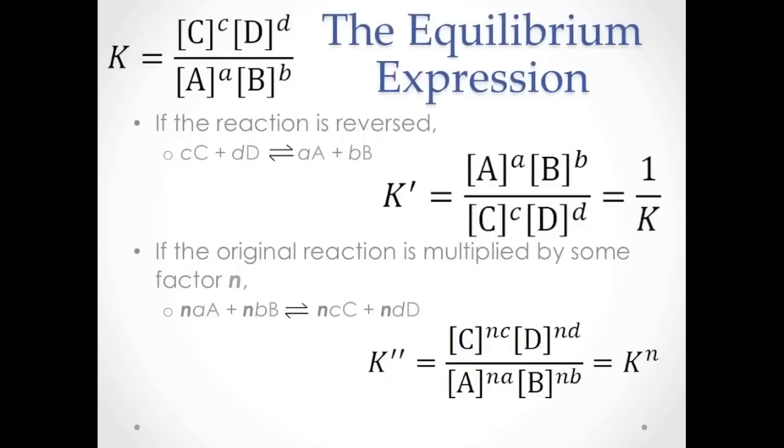If the reaction were reversed, applying the law of mass action makes the new equilibrium constant, we'll call it K prime, the reciprocal of K, because the numerator and denominator of this ratio would be flipped.